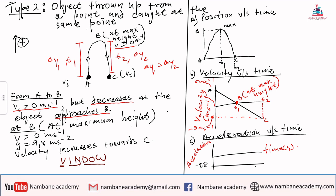But now let's consider this Type 2 object: thrown up from a point and caught or returns to the same particular point. So it was given initial velocity to move up. Hence, it is important to label our points in the motion. So now let's consider the motion.